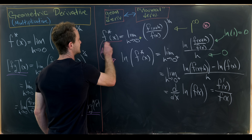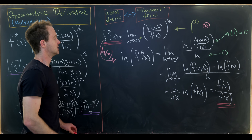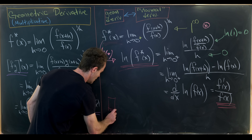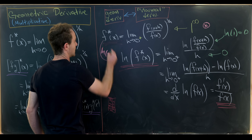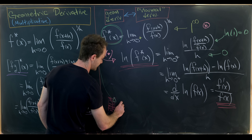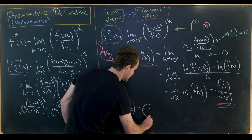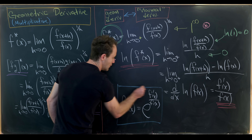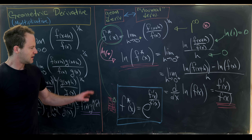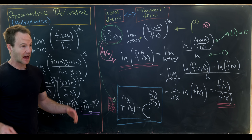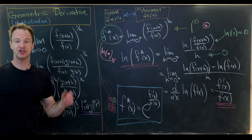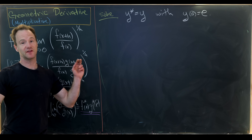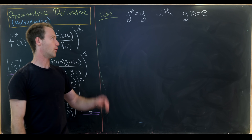So we have ln(f*(x)) = f'(x)/f(x). Exponentiating both sides gives us the closed form: f*(x) = e^(f'(x)/f(x)). We can verify this with our earlier example. Now, using this closed form, let's finish by solving the simplest geometric differential equation: y* = y, with initial condition y(0) = e — analogous to y' = y with y(0) = 1 for the normal derivative.